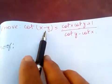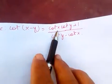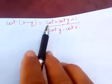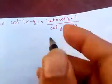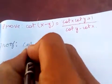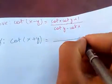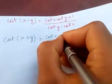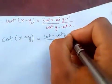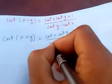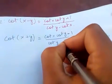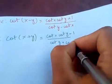My friends, let's prove cot(x - y) is equal to cot(x) cot(y) + 1 over cot(y) - cot(x). And we know that cot(x + y) is the same as cot(x) cot(y) - 1 over cot(y) + cot(x).